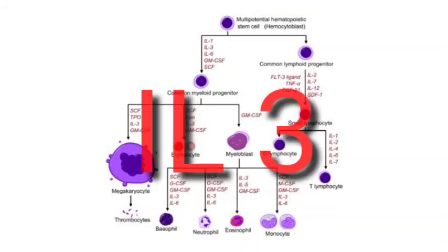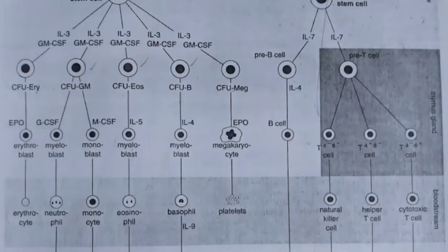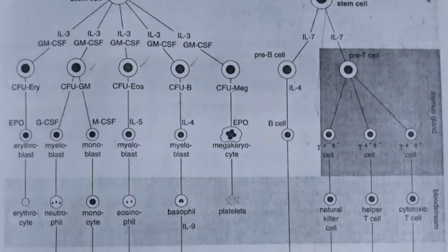Bone marrow cells are thought to produce an as-yet undefined factor that maintains the steady-state level of the pluripotent stem cell. Other growth factors that influence the development of early stages of hematopoiesis include granulocyte-monocyte colony stimulating factor (GM-CSF) and interleukin-6. The development of B and T lymphocyte progenitor cells is influenced by interleukin-7 and probably by other factors as well.